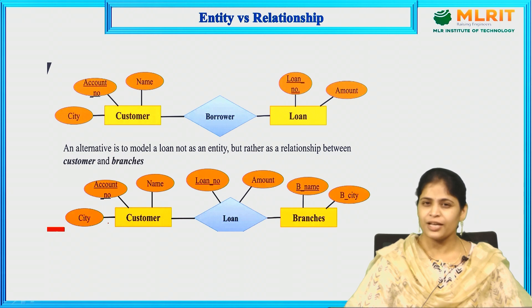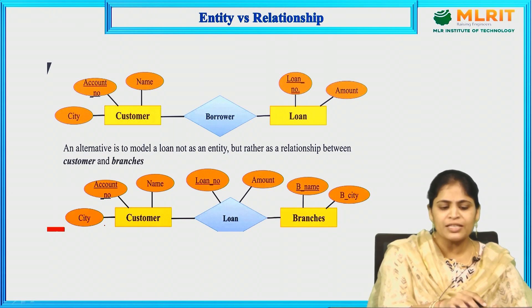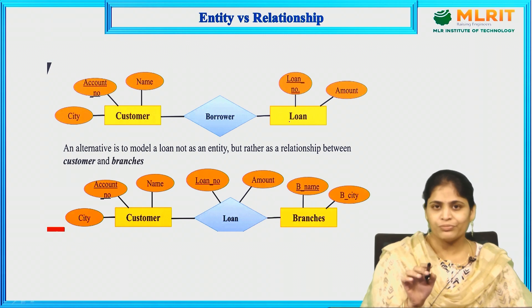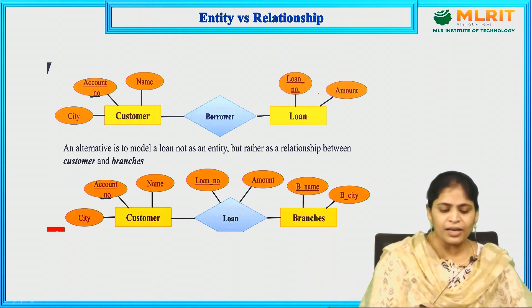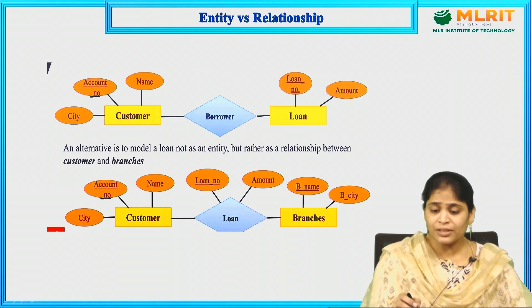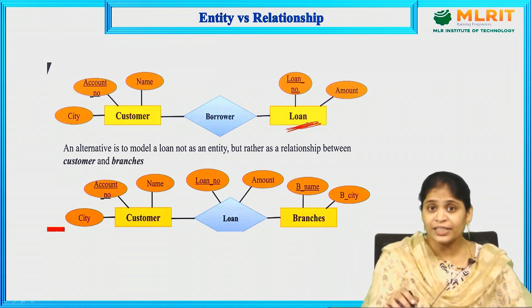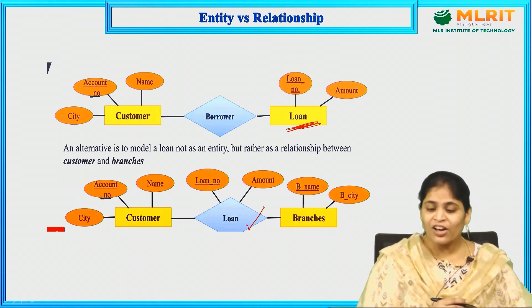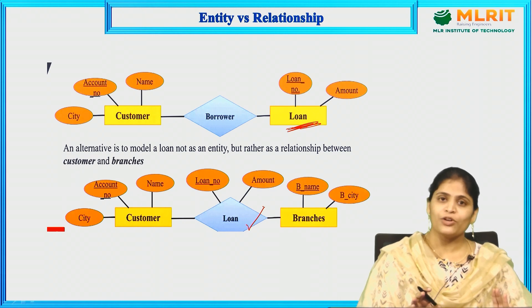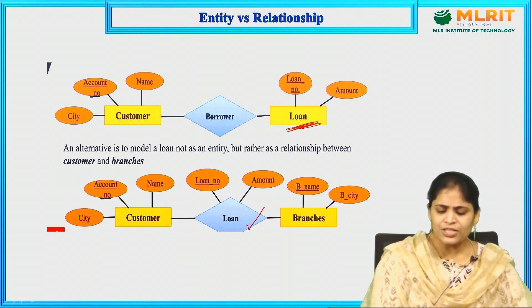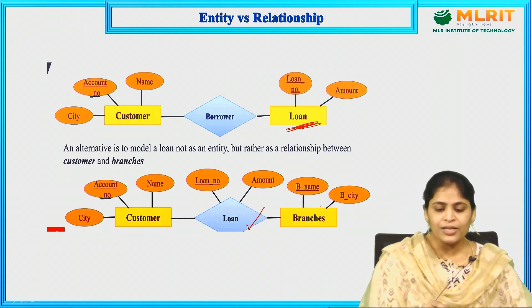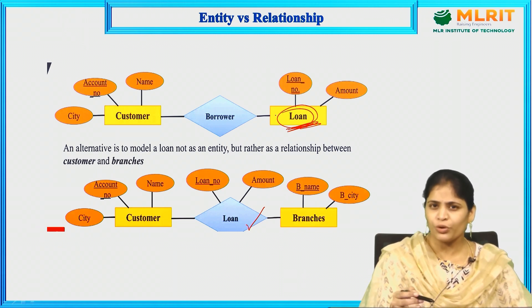The second concept is entity versus relationship — whether we should design a concept as an entity or a relationship. Let us consider this with an example. Here in this diagram, we have two entities: customer borrows loan. Customer and loan each have their own attributes. In an alternative model, the loan which is considered as an entity in the first diagram is considered as a relationship in the second diagram. Both representations can be used — it depends upon the application you are going to develop.